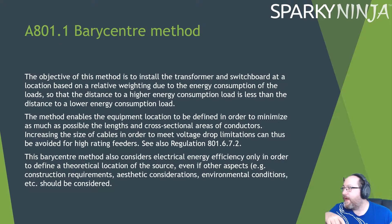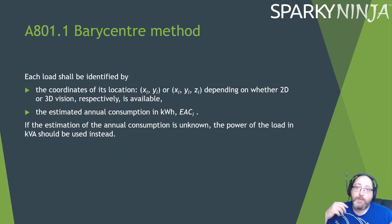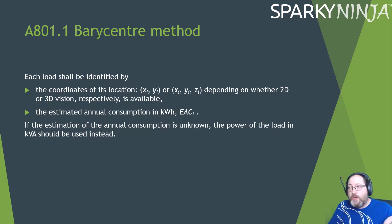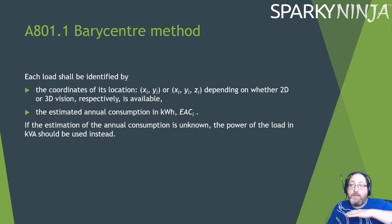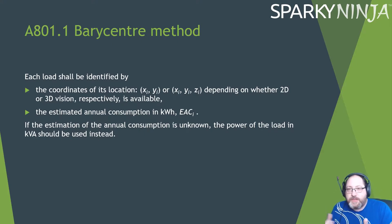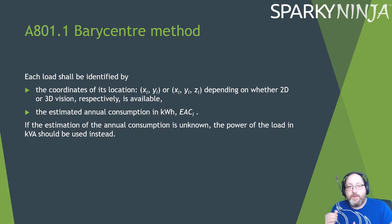Each load will be identified by the coordinates of its location. You go to the customer and find out what they have and where it's going. Depending on whether you're on a single floor or multiple floors, you'd do either a 2D or 3D calculation. For two dimensions you use X and Y coordinates; for three dimensions you add Z. You'll also need the estimated annual consumption in kilowatt hours — the EAC — for each load.